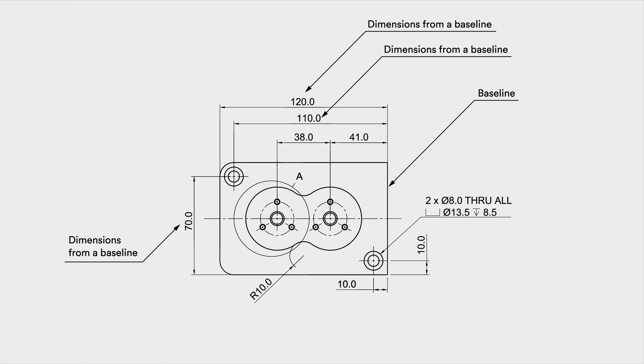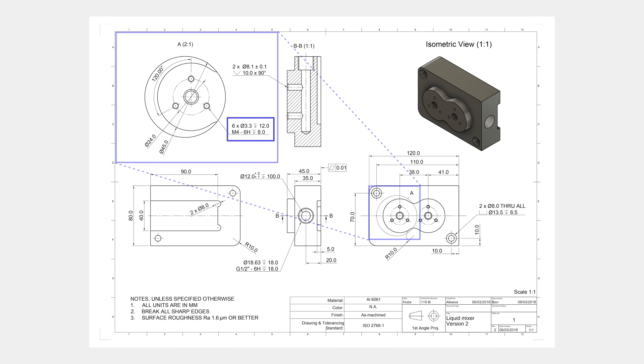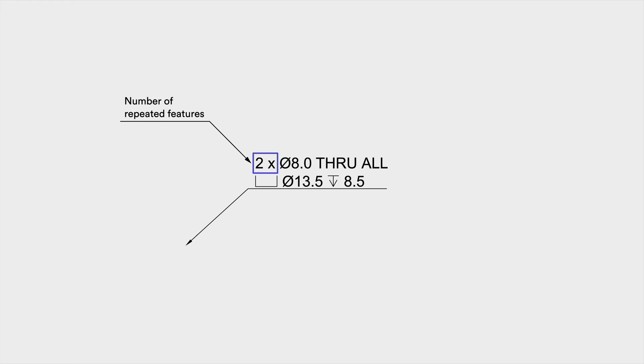Third, add dimensions to other features. A good practice is to place all dimensions starting from the same baseline, as shown in the example. Fourth, the dimensions should be placed on the view that describes the feature most clearly — for example, the dimensions of the threaded holes are not included in this view, as they are more clearly described in the detail view. Fifth, for repeated features, add dimensions to only one of them, indicating the total number of times the feature is repeated on the current view. In the example, two identical holes with a counterbore are specified using a 2X in the callout.